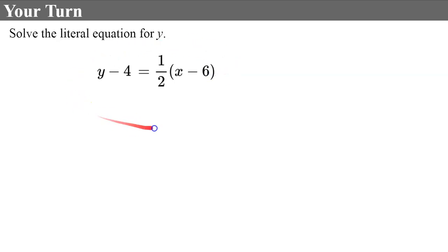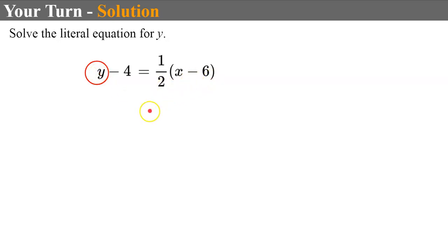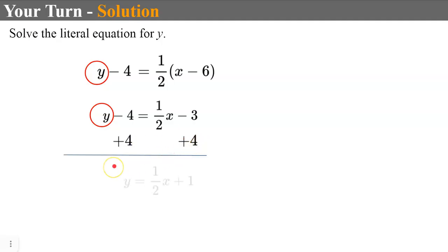Solve this equation, which is in point-slope form, for Y — going from point-slope to slope-intercept. The one trick you have to do first is distribute the ½, because we have to clear the parentheses before combining like terms, much like PEMDAS. So the first thing I do is distribute the ½ on the right side: ½ times X is ½X, and ½ times -6 is -3. Now I'm still solving for Y, so the inverse of subtracting 4 is to add 4 to both sides, giving me Y = ½X. Then -3 and +4 combine to give positive 1. So the same equation is written once in point-slope form and once in slope-intercept form.